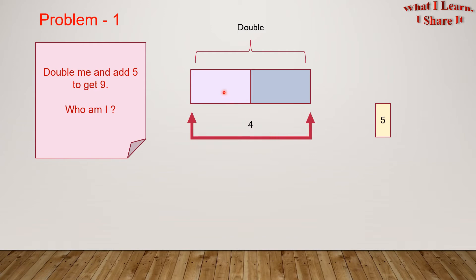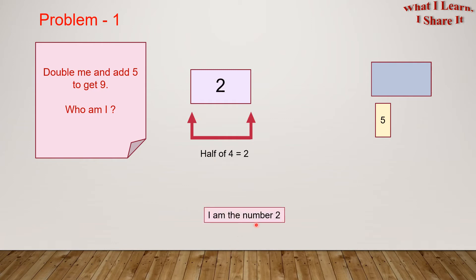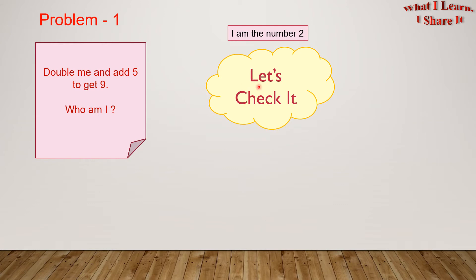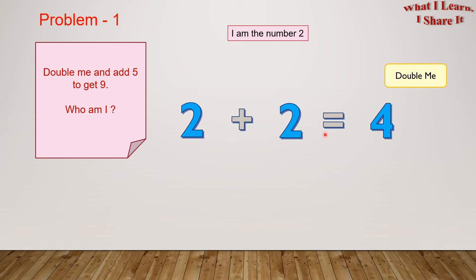Now, these 2 boxes over here are making 4. Let's remove one of these boxes and we will get half of 4, which is 2. I'm the number 2. Let's check our answer. The first clue is double me, so we'll do 2 plus 2 equals 4.